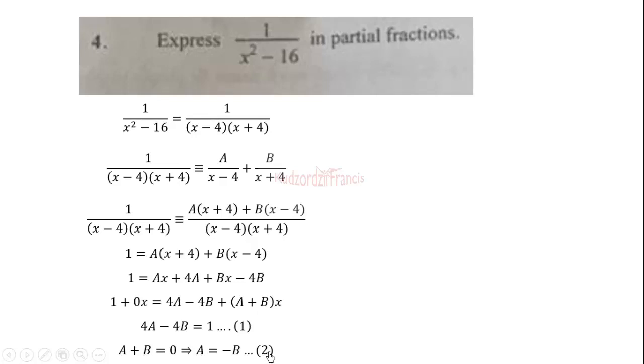Now the next thing we do is to solve this equation simultaneously. So let's put equation 2 in equation 1 to get this. So we can simplify to get negative 8B equals 1, which means that B is equal to negative 1 over 8. Then we substitute into the second equation to get A to be 1 over 8.